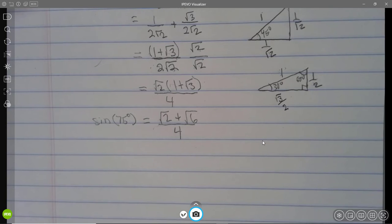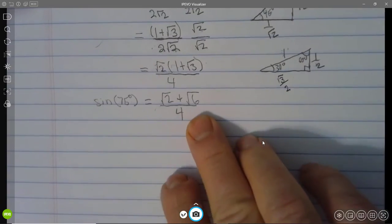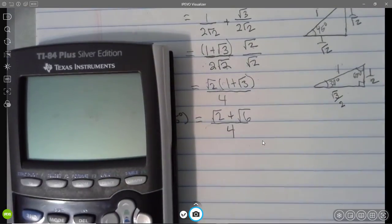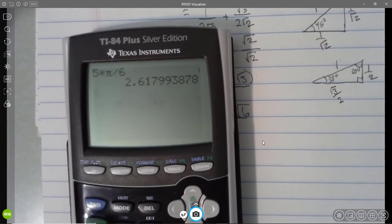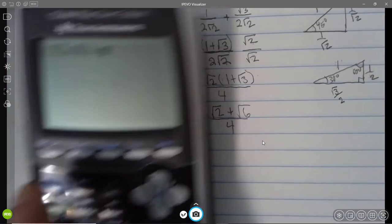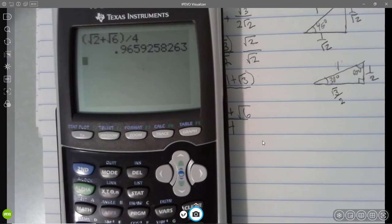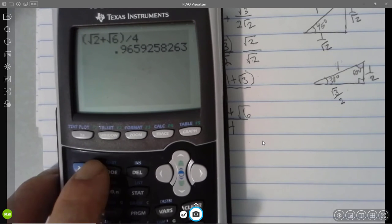There's a couple of ways that we could confirm this. The first would be that we could simply get a decimal approximation for this fraction. So let's go with that. I'll take root 2 plus root 6 divided by 4, and I get about 0.9659.